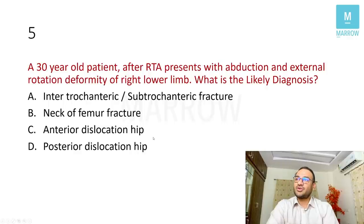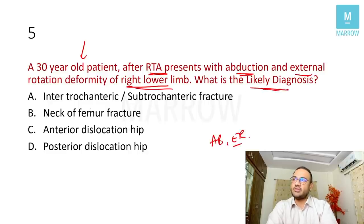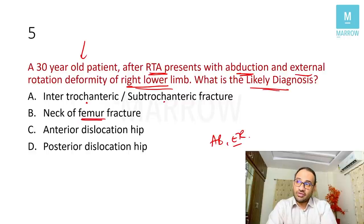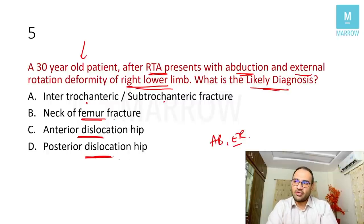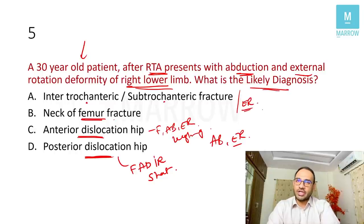The next straightforward question: a 30-year-old patient with a road traffic accident presents with abduction and external rotation of the right lower limb. The likely diagnosis — the options include intratrochanteric fracture, subtrochanteric fracture, neck of femur fracture, anterior dislocation of hip, or posterior dislocation of hip. The ideal answer is anterior dislocation of hip.